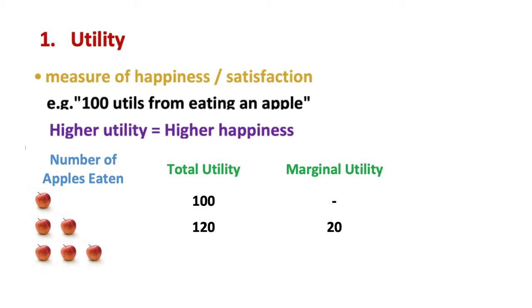Now suppose you eat your third apple. It's quite likely that the third apple doesn't increase the happiness or satisfaction as much as the first or second apples did. Maybe the total utility increases to 135, so that the additional utility, the marginal utility, derived from the third apple is only 15.